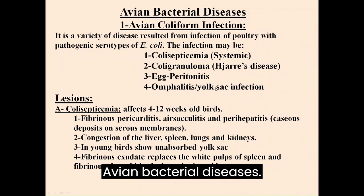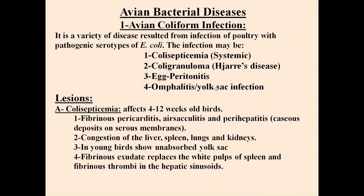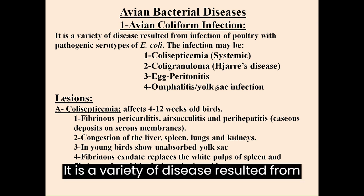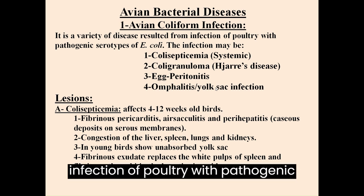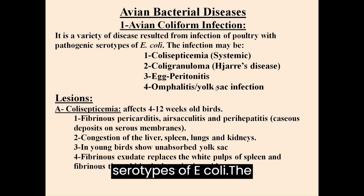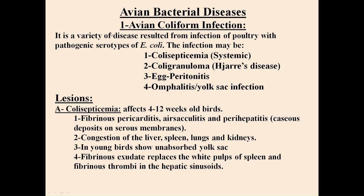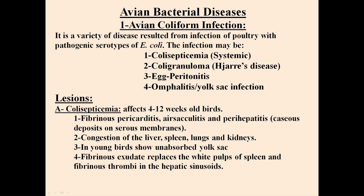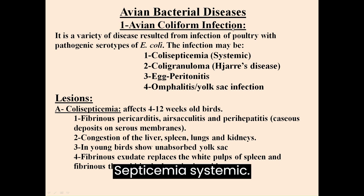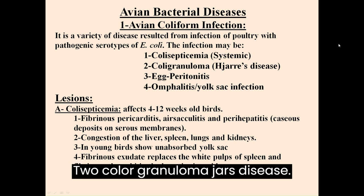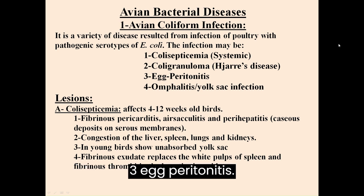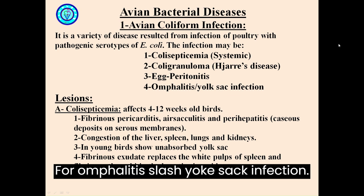Avian Bacterial Diseases. Avian Coliform Infection is a variety of diseases resulting from infection of poultry with pathogenic serotypes of E. coli. The infection may manifest as: 1. Colosepticaemia (systemic), 2. Cologranuloma (JARS Disease), 3. Egg Peritonitis, 4. Omphalitis-Yolk Sac Infection.